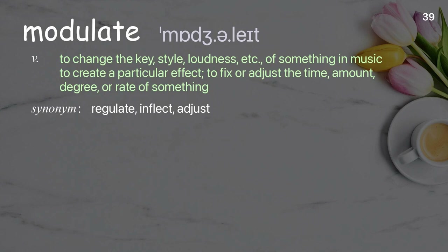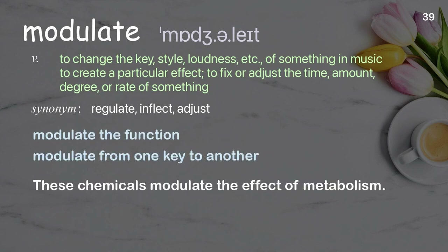Modulate: to change the key, style, loudness, etc. of something in music to create a particular effect; to fix or adjust the time, amount, degree, or rate of something. Examples: Modulate the function. Modulate from one key to another. These chemicals modulate the effect of metabolism.